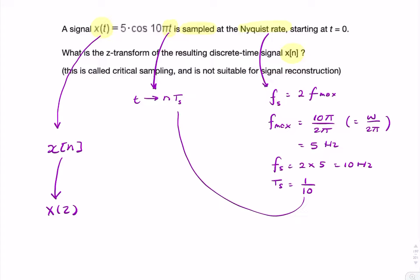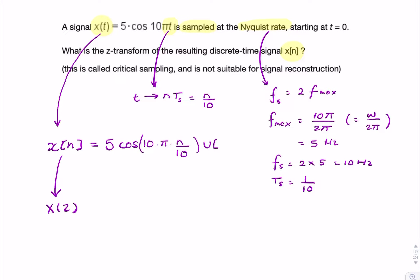So that's what I'm replacing in there. So t will be replaced with nT, or n over 10. So I can rewrite my continuous time signal as a discrete time signal as 5 cosine(10π·n/10). And I then need to multiply that by a unit step.